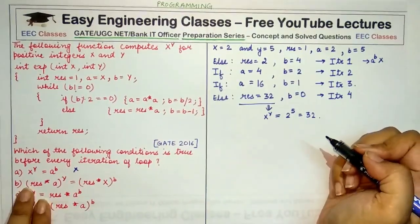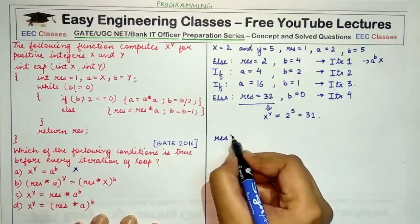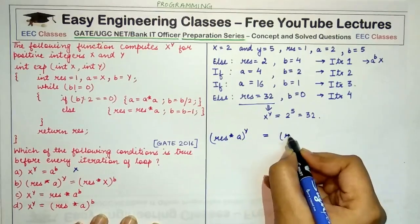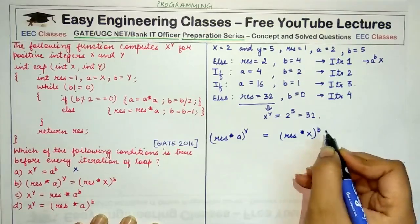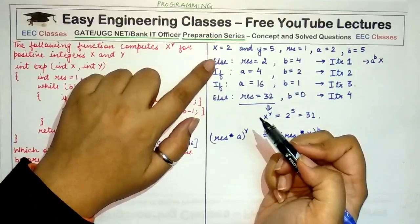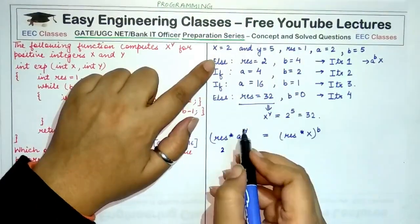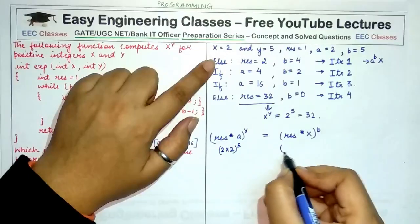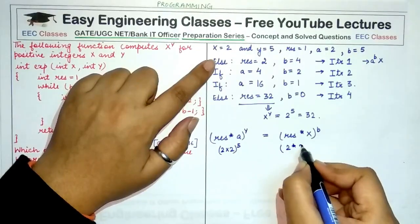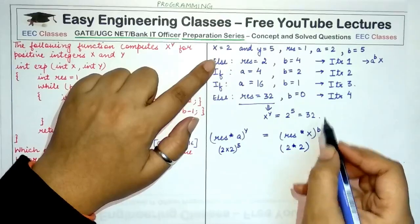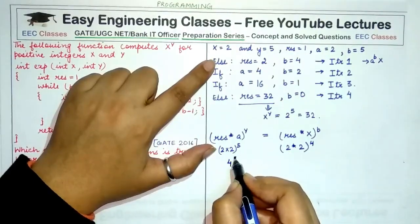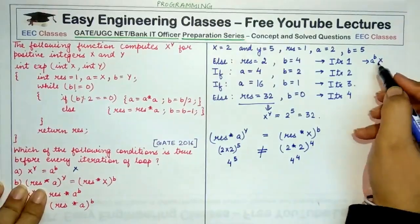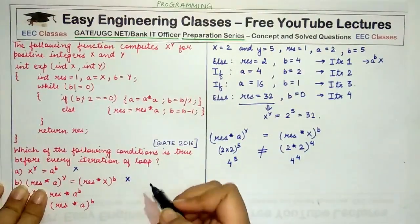The second option says result multiplied by a raised to the power y. After the first iteration, result is 2, so it becomes 2 × 2^5. Comparing with 2 × x^b, where x is 2 and b is 4, we get 4^5 versus 4^4. These two values are not equal in the first iteration itself, so this option is also incorrect.